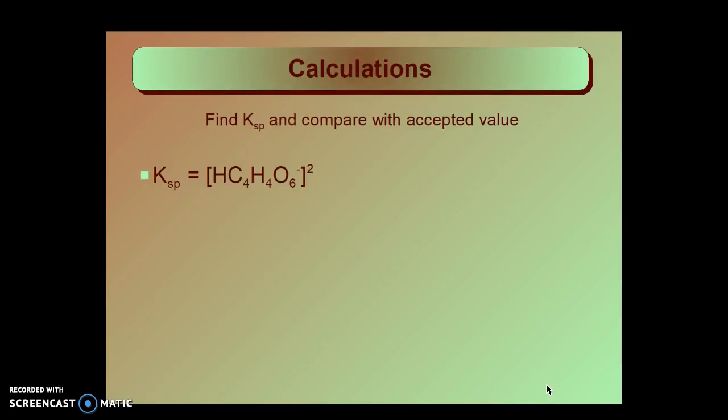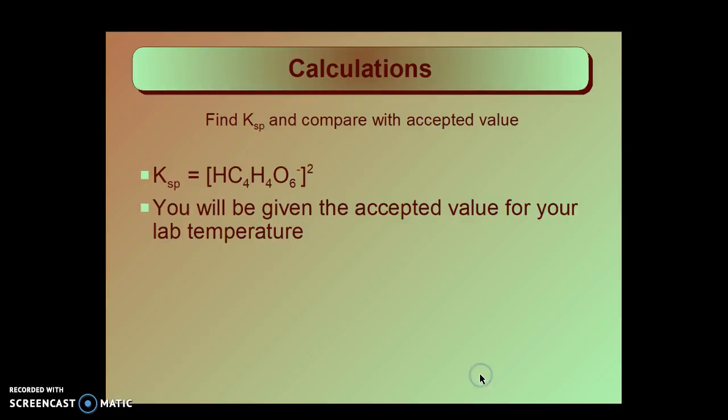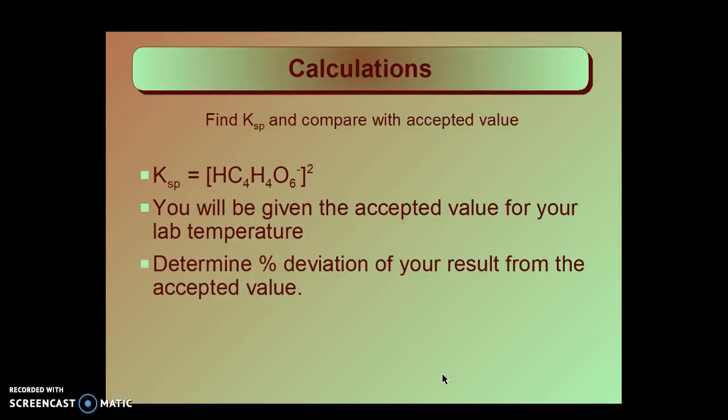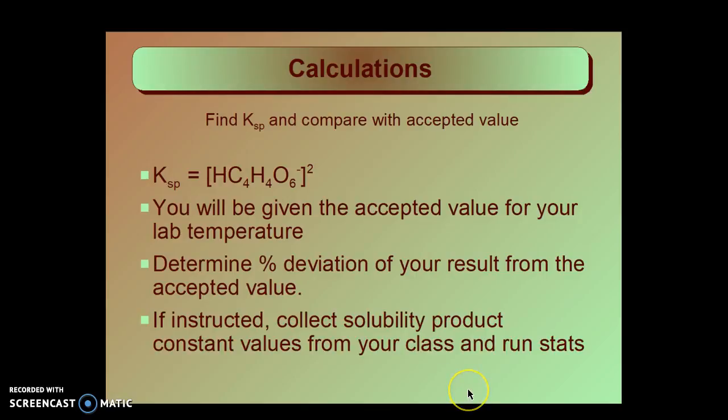You then square that molarity. You'll be given the accepted value of KHT's Ksp for your lab temperature that day. Determine the percent deviation of your result from the accepted value. And if instructed you'll collect solubility product constant values from the rest of your class or classes, and you'll run statistics including getting rid of any outliers before you can get an average potassium acid tartrate Ksp.